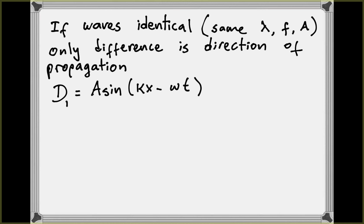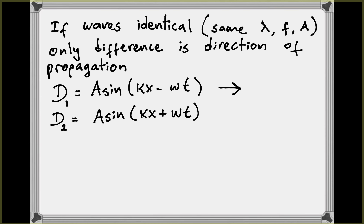As we discussed in a previous video, sinusoidal traveling waves can be described by the mathematical function A sine of (kx − ωt). Remember that k is the wave number, 2π over lambda, and ω is called the angular frequency, equal to 2π times the frequency. This describes a wave traveling to the right. The mathematical description for a wave traveling to the left uses a plus sign: A sine of (kx + ωt).